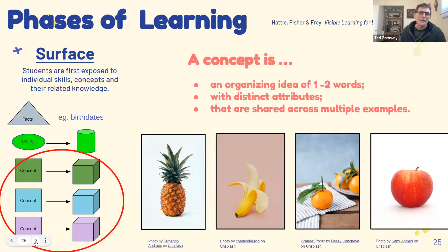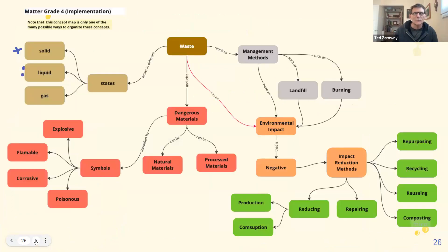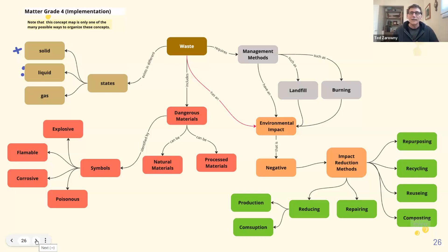Concepts are those organizing ideas — the key words and organizers we're working with. For example, 'fruit' is a concept: it has attributes and examples, and we can see fruits across different spectrums. We'll pull those out and work with them at the surface level before getting to the understanding piece. I want to point out how to read this concept map — you'll get a copy. Beginning at the top with waste: waste includes dangerous materials, which can be natural or processed, and they're identified by symbols. Waste also exists in different states of matter, and waste requires management methods such as landfill or burning.